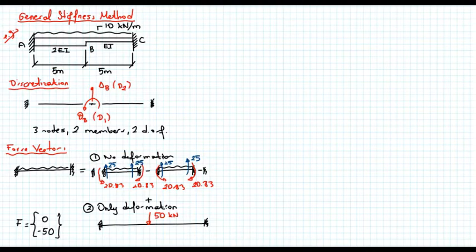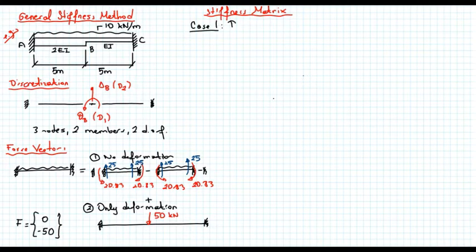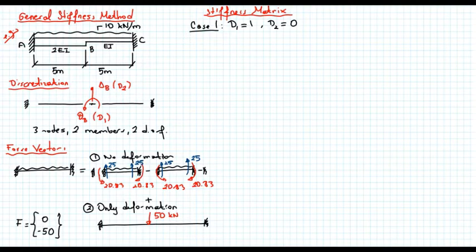Now I have to figure out the stiffness coefficients. Remember that the stiffness coefficients — the stiffness matrix — are a property of the structure and do not change with loading. In order to determine the stiffness coefficients, we apply case one: the first degree of freedom is equal to unity while all other degrees of freedom are equal to zero. We determine what deformation we get and the corresponding forces.